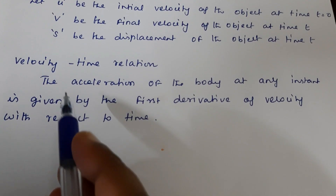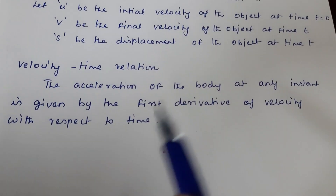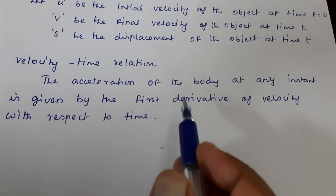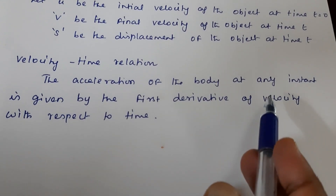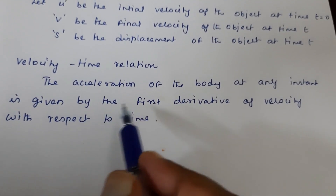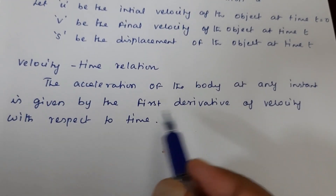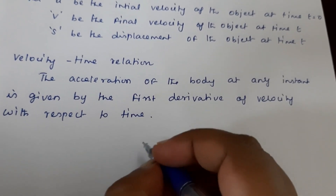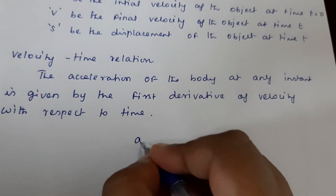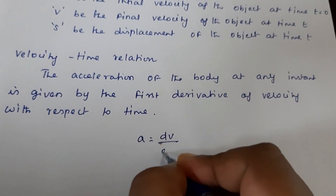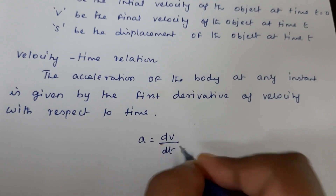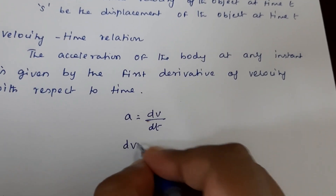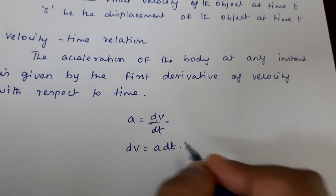The first relation we are going to derive is the velocity-time relation. The acceleration of an object at any instant is given by the first derivative of velocity with respect to time. So we can write a is equal to dv by dt, and this can be written as dv is equal to a dt.